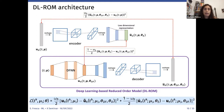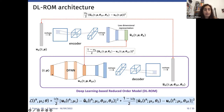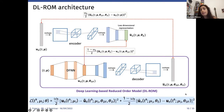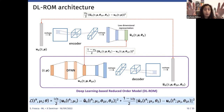The DL-ROM architecture at training time is composed of three building blocks: the encoder function, the deep feedforward neural network (DFNN), and the decoder function. Starting from the FOM solution, the encoder provides a low-dimensional representation. The same parameter instance enters the DFNN and provides the intrinsic coordinates. The error between these two low-dimensional vectors is accumulated, then the intrinsic coordinates enter the decoder to provide the ROM approximation, giving the reconstruction error. At testing time, the encoder is discarded.